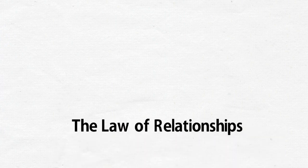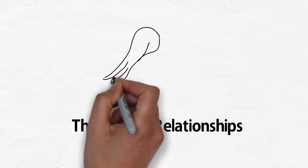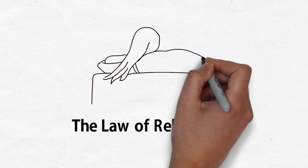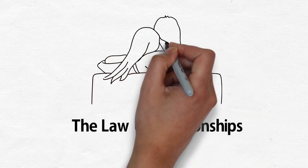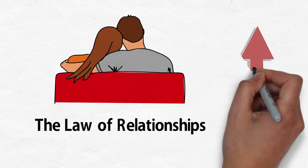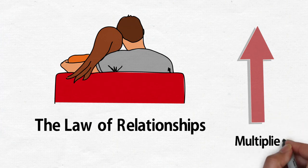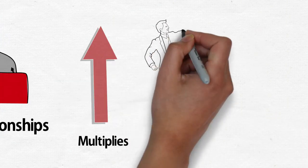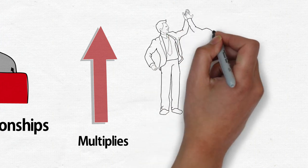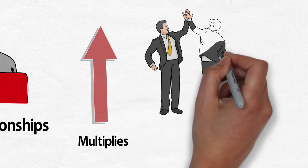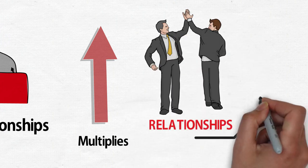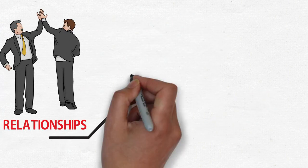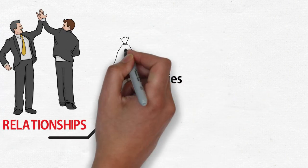The law of relationships. The command 'be fruitful' means be relational, because everything advances, increases, and multiplies on the basis of relationships. Relationships are advantageous connections. The easiest way to succeed in life is through relationships.